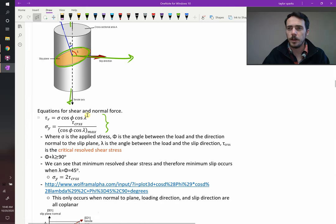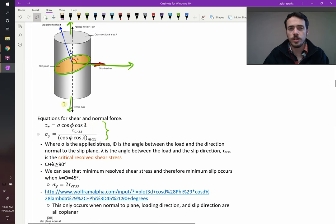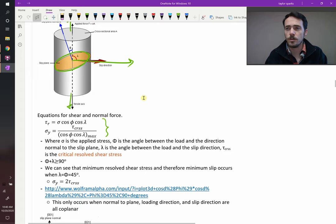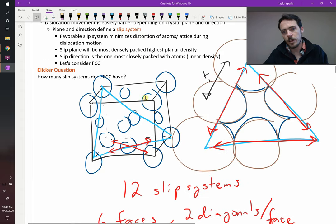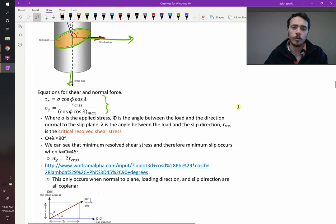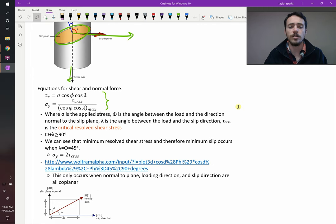So if you know phi and you know lambda, then you can figure out what is the resolved shear stress on that plane in that direction. In fact, there exists something called the critical resolved shear stress, which is the maximum shear stress that your crystal can withstand before you get atoms sliding past one another. If you go above the critical resolved shear stress, atoms start to slide past one another on that plane in your material.